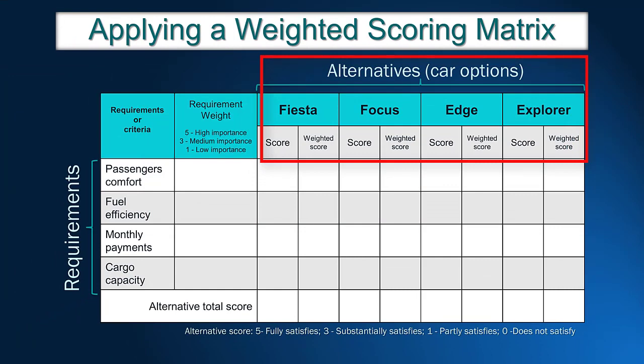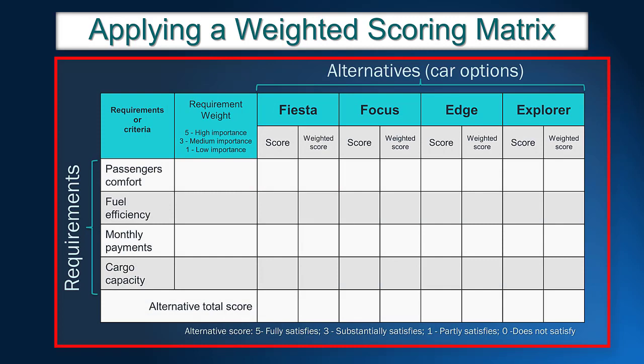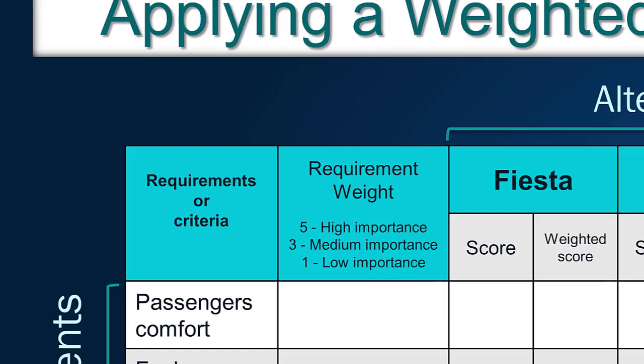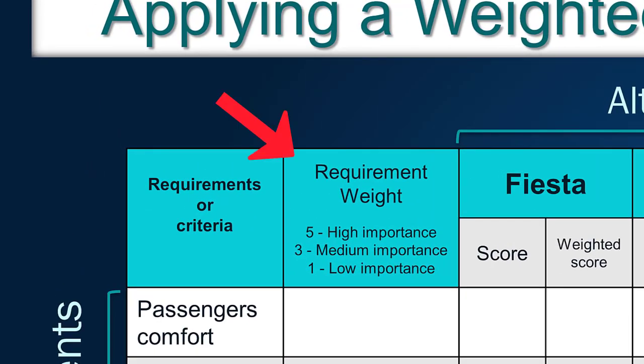Requirements are in the rows and alternatives in the columns. The next step is to define which requirement is the most important and which one is the least important. The challenge is to translate requirement importance into numeric weights. The most important requirement receives weight 5 (high importance), and the least important receives weight 1 (low importance).